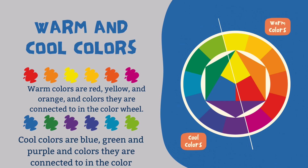Warm and cool colors: warm colors are red, yellow, and orange, and the colors connected to them on the color wheel. Cool colors are blue, green, and purple, and the colors connected to them on the color wheel.